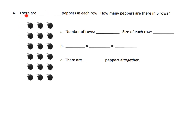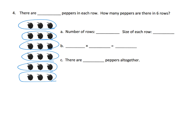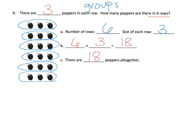Here we've moved to the array, and it says there are blank peppers in each row. The idea is to help students learn that vocabulary — rows versus columns. Books go in a row, like on a shelf, not in a column. I can see that there are three peppers in each row, and there are six rows. The number of rows — which is like saying number of groups — is six, and the size of each row is three. So we say six groups of three equals 18, meaning there are 18 peppers altogether.